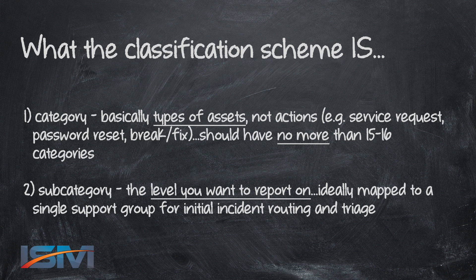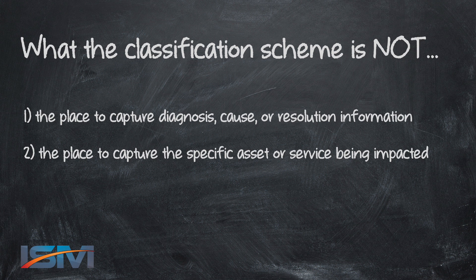The next level down, the subcategory, captures what you need to report on — the quantitative metrics you'll look at on a regular basis for where your incidents are falling within the IT services and infrastructure you provide. One of the primary purposes is having, where appropriate, a mapping of subcategories to a specific assignment group so that we can auto-route those incidents for quicker triage and quicker service restoration.